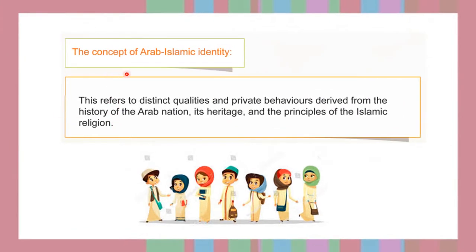So what is the concept of Arab Islamic identity? Arab Islamic identity refers to distinct qualities and private behaviors that came from the history of the Arab nation, its heritage — meaning what we have inherited from our ancestors — and also the principles and teachings of the Islamic religion. All of this comes into play when we talk about Arab Islamic identity.